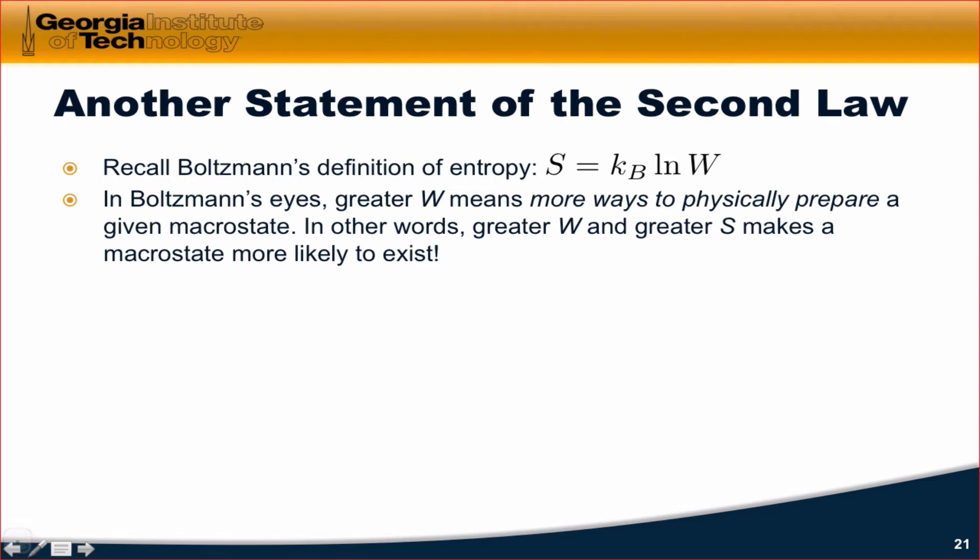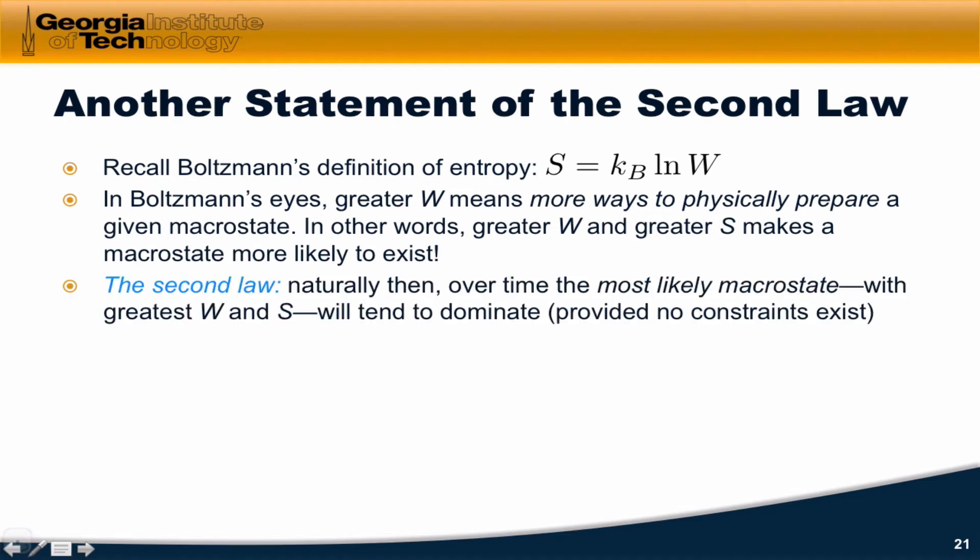Probabilistically, a state with greater S has a greater probability of existing. In this sense, the second law seems fairly natural then. Over time, the most likely macrostate, the one with the highest W, the most microstates associated with it, is going to come to dominate.